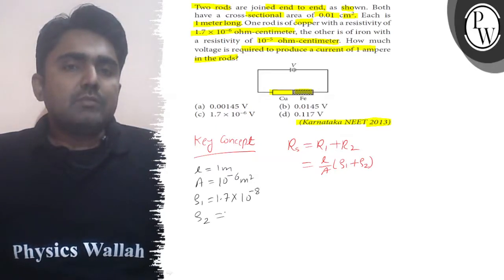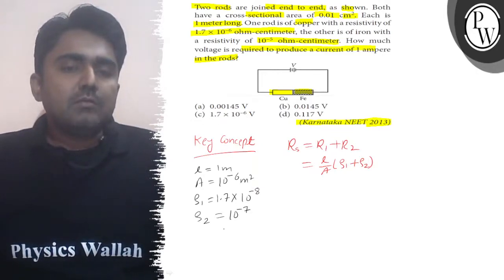Resistivity of second material is 10⁻⁵, multiply by 10⁻² to convert to meter, will be 10⁻⁷. These values are in 10⁻⁸ format. So it will be 10 × 10⁻⁸.